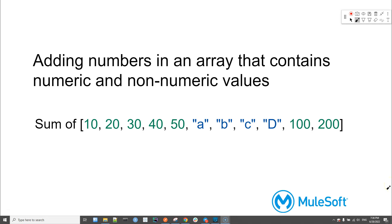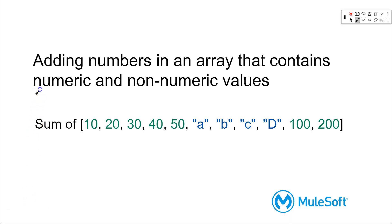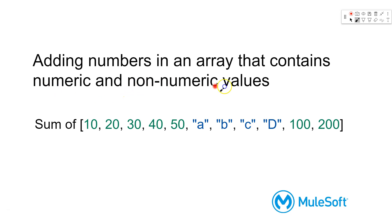Hi everyone. In this short video we are going to see how to add numbers in an array that contains numeric and non-numeric values in MuleSoft. Consider this example: we have an array that has numbers and letters. So how can we safely skip the letters and add only the numbers?